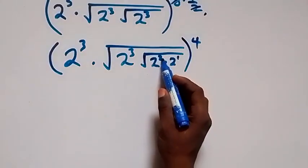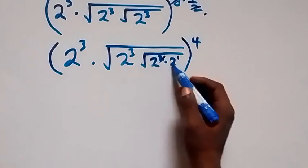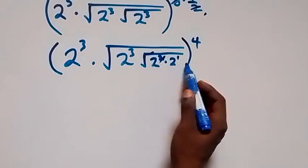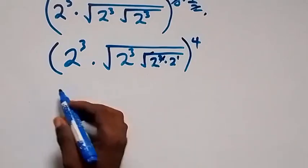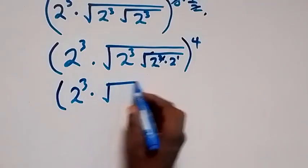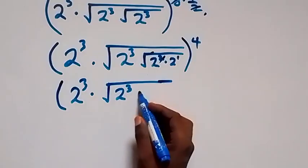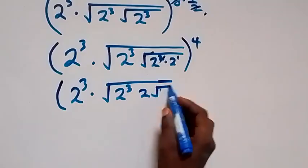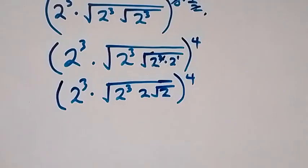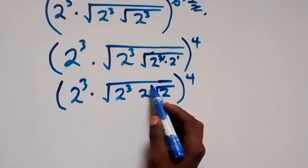Square root of two raised to power two — we cancel the square roots, but we still have square root of two raised to power two, so here we now get two root two. From here we have two raised to power three, then square root of two raised to power three, then inside that we have two root two.